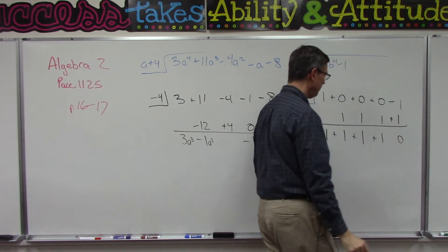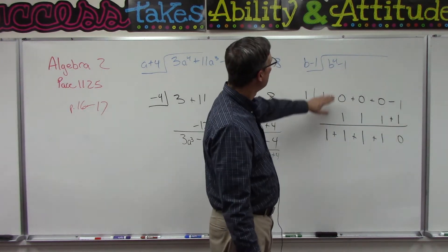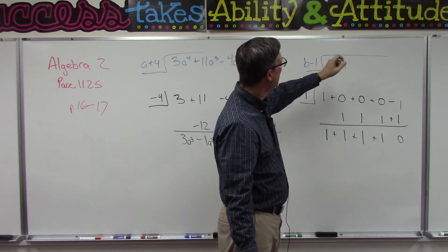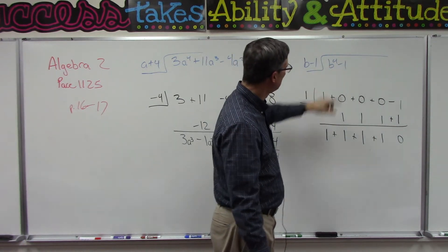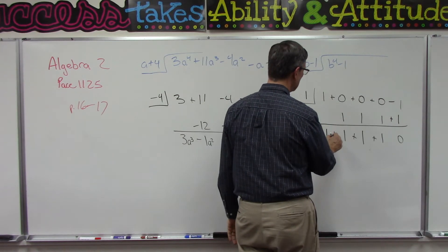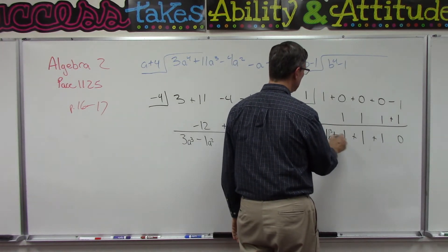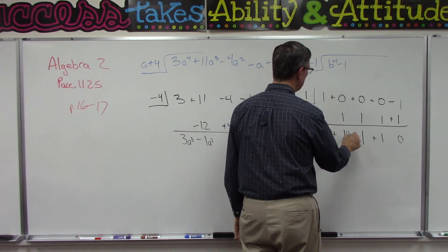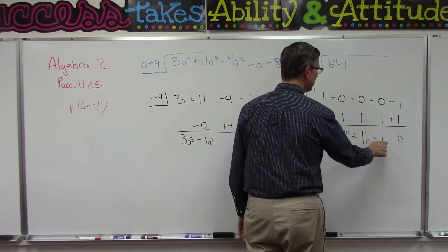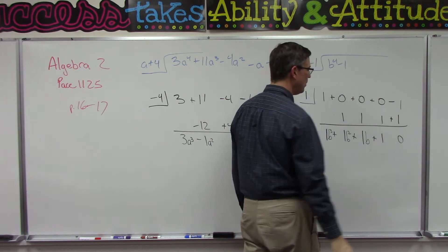Now we can go back and we're going to take away 1 from the exponent. Since this was b to the fourth, in our answer this becomes b to the third, b squared, b, this is our constant, and we don't have a remainder.